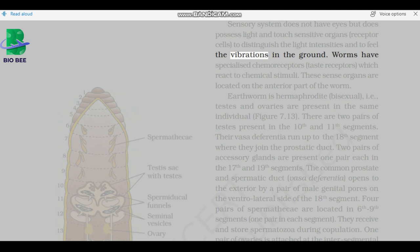Worms have specialized chemoreceptors, taste receptors, which react to chemical stimuli. These sense organs are located on the anterior part of the worm. Earthworm is hermaphrodite, bisexual, i.e. testes and ovaries are present in the same individual.